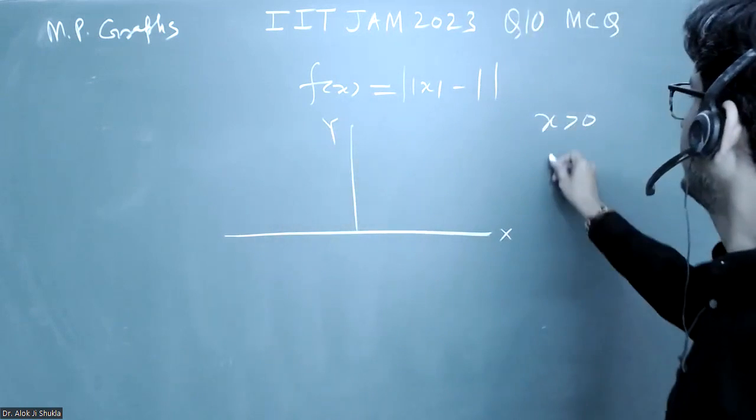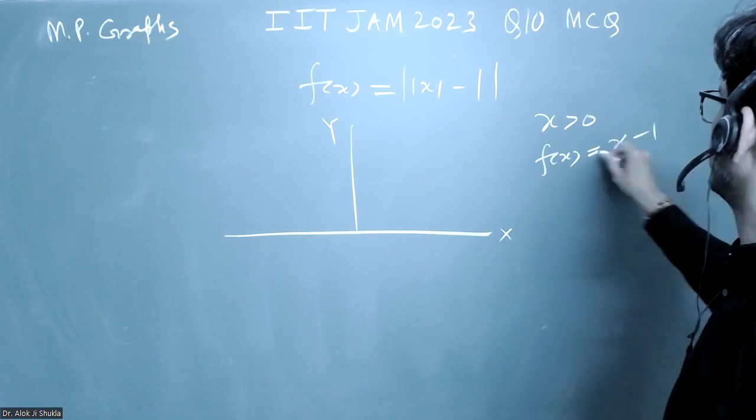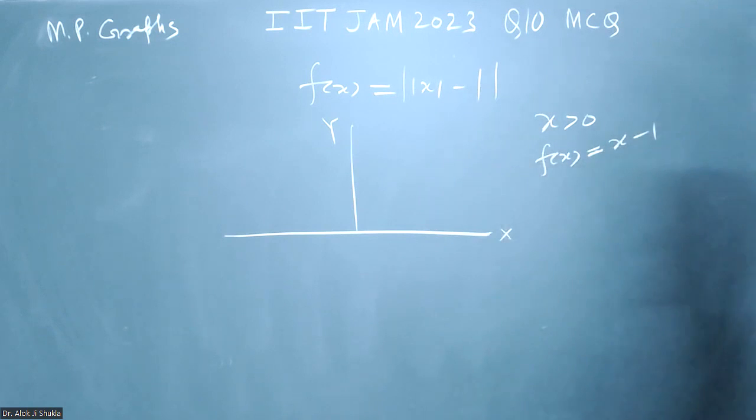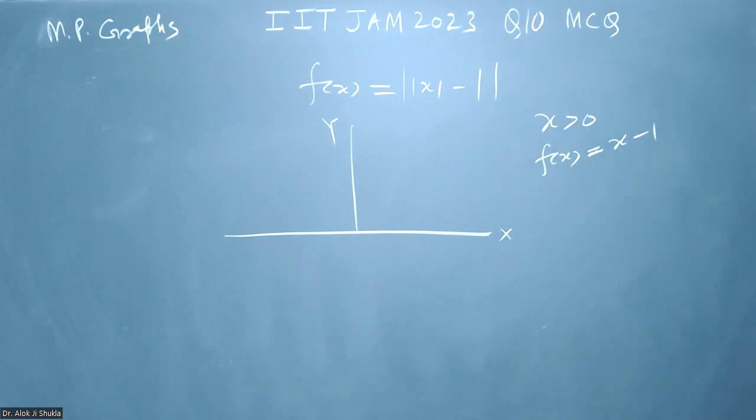So if I take x greater than 0, my graph will be simply f(x) is equal to x minus 1, because this x is positive, so this will be x minus 1 and then mod value.